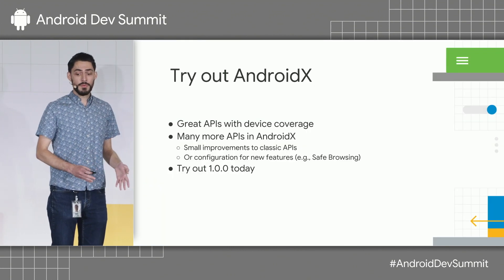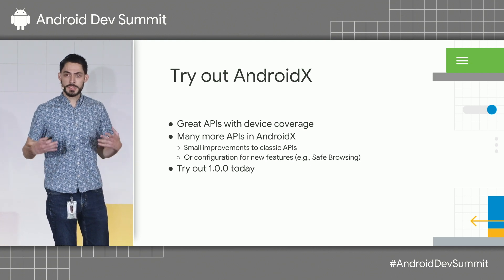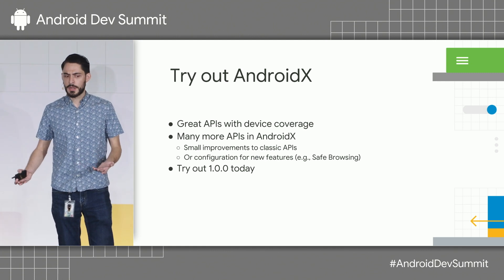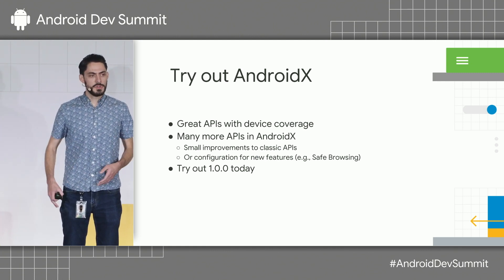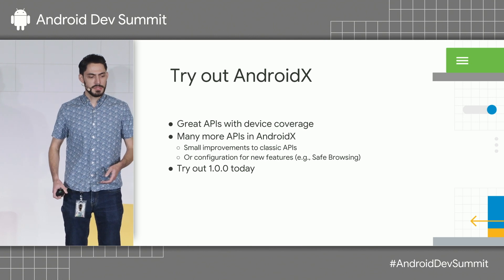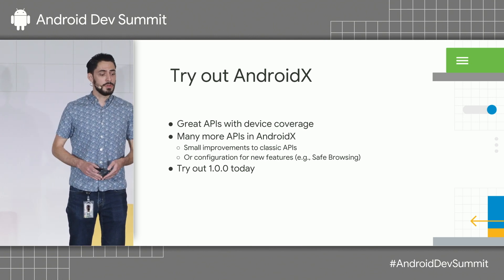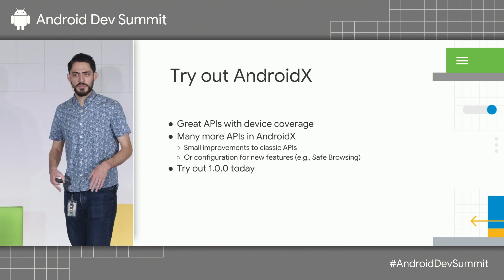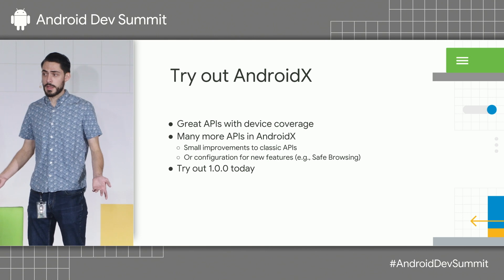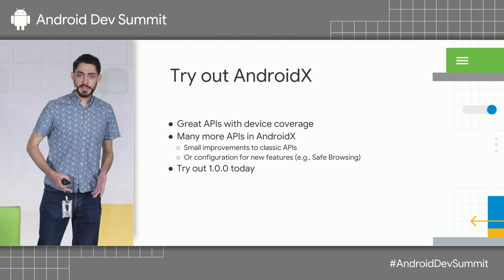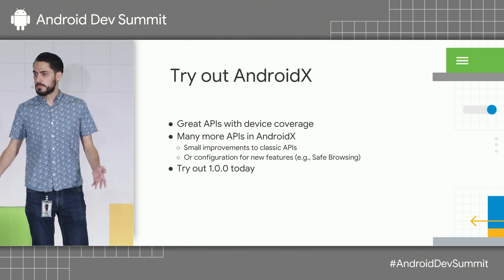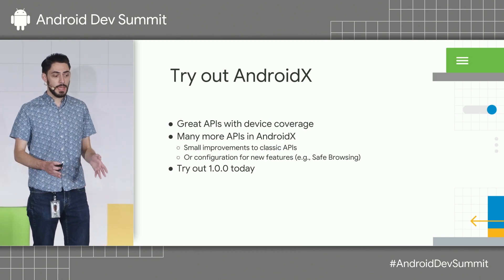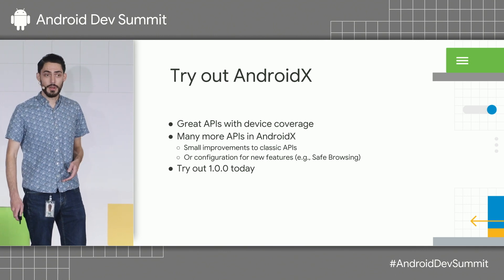This is just one example of what we have to offer in AndroidX. I'd really encourage you to go check it out. We're giving you the device coverage you need to actually use these APIs, and we'll have a lot more APIs available — some small improvements on classic APIs, but some for entirely new features like safe browsing. And the best part is this isn't a soon-to-be-released library. It's already out there. You can add it into your apps today with our 1.0 release.